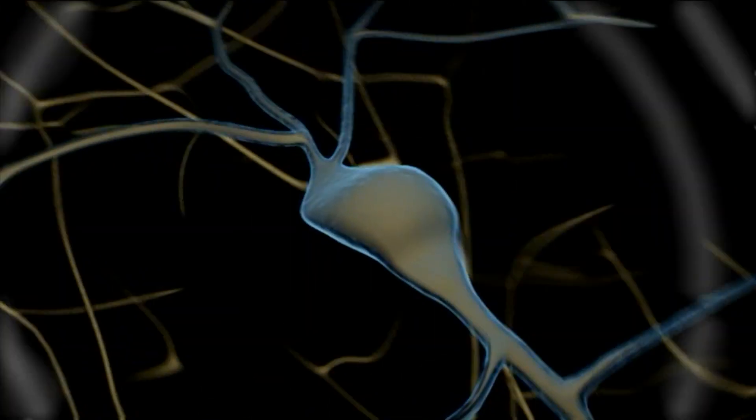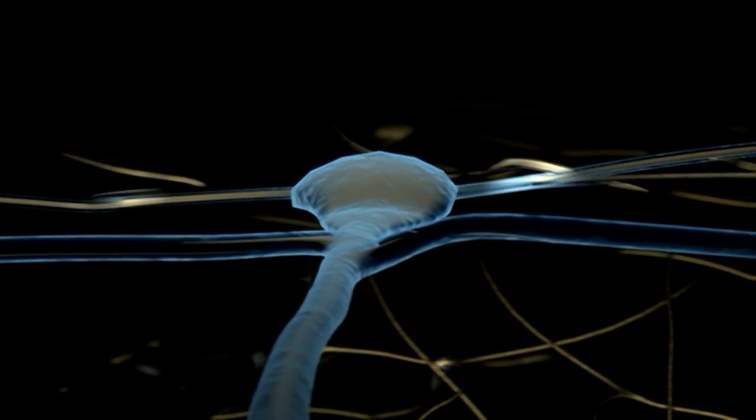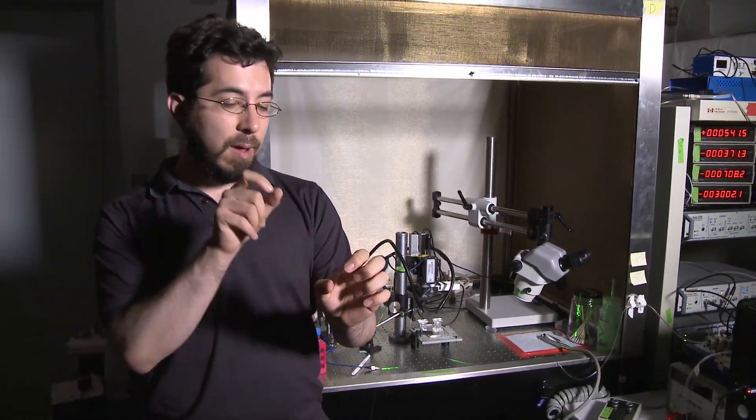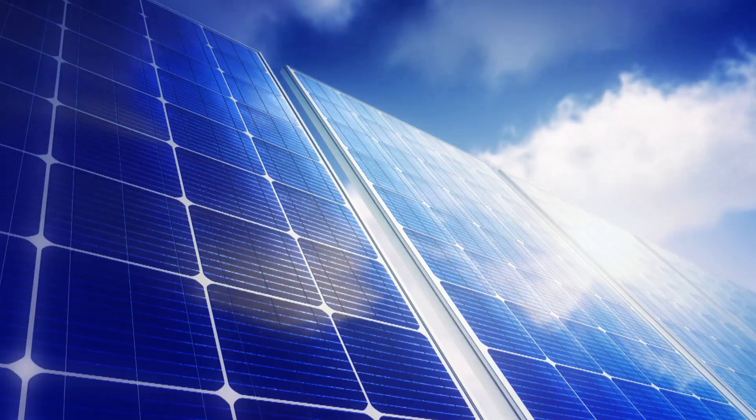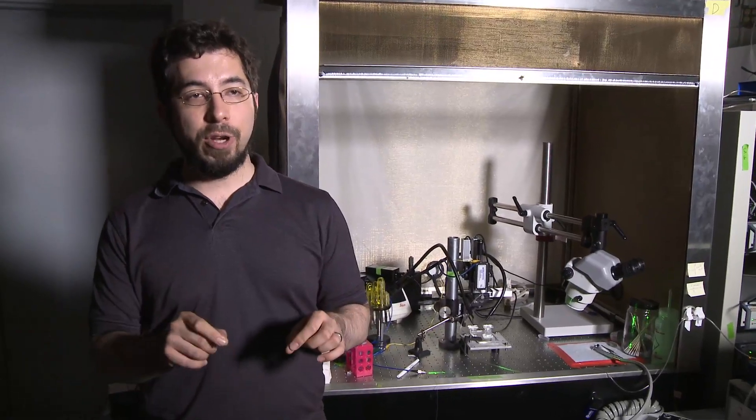Neurons are electrical devices. They compute using electricity. So we need to be able to basically create electricity at a distance. One way to do it is to install in these neurons, just the neurons that you care about, molecules that act like solar cells that convert light into electricity.